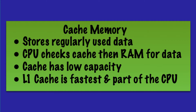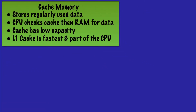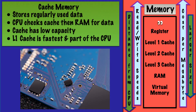Typically, processors have three or more levels of cache memory. Level one cache tends to be the fastest, the smallest in capacity, and is built into the CPU itself. Level two cache will be slightly slower, slightly larger, and slightly further away — and so on. These are the key components you need to understand inside a CPU.